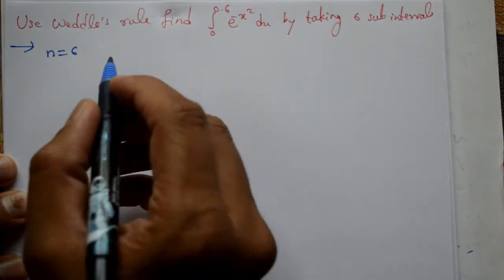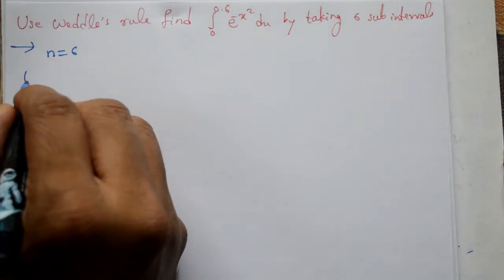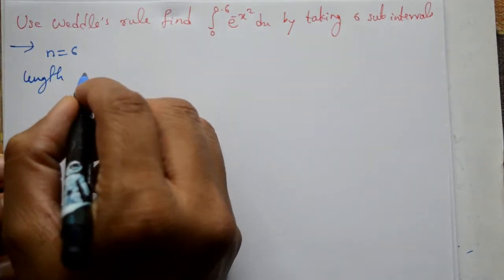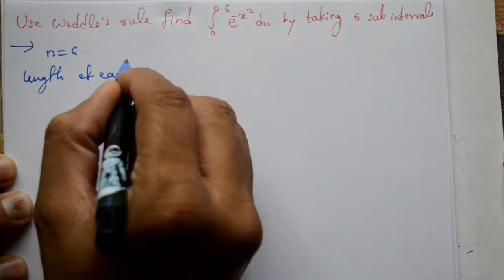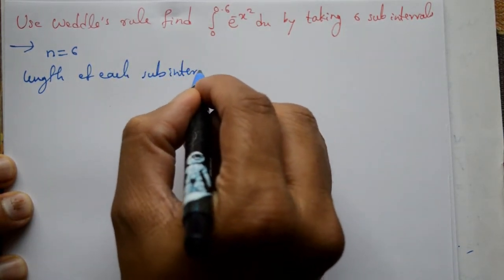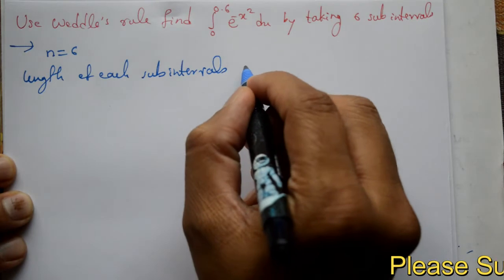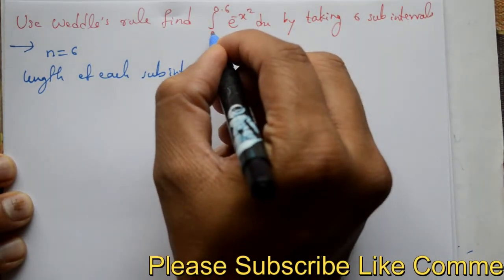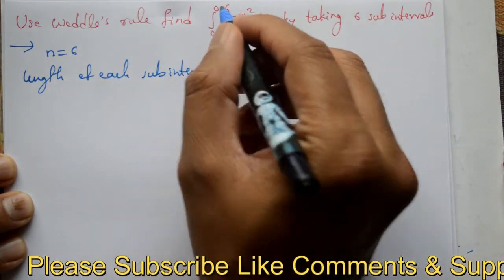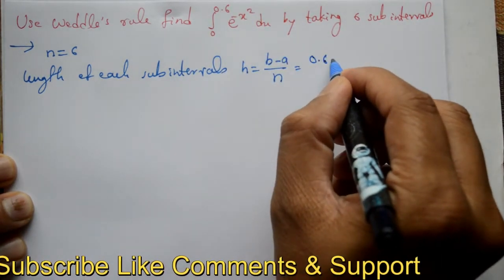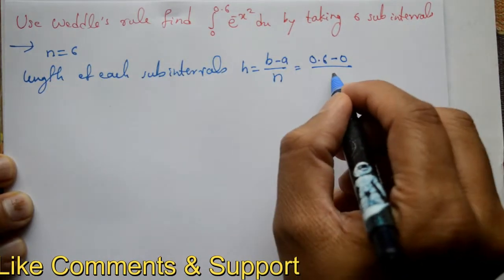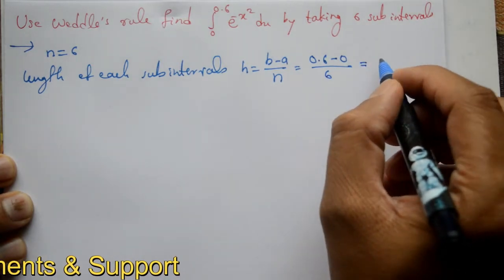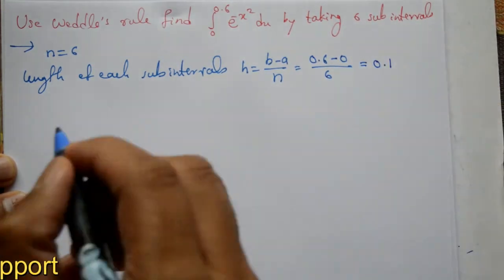Next we'll find the length of each sub-interval. The formula is h equals b minus a divided by n. Integration is from a to b, where a is 0, b is 0.6, so h equals 0.6 minus 0 divided by 6, which gives 0.1.